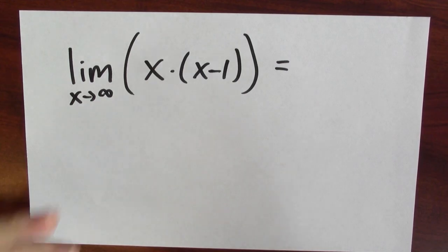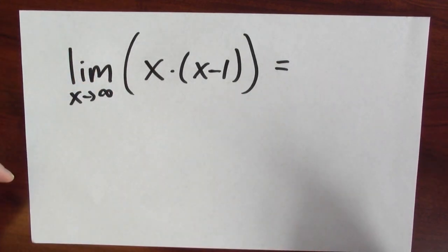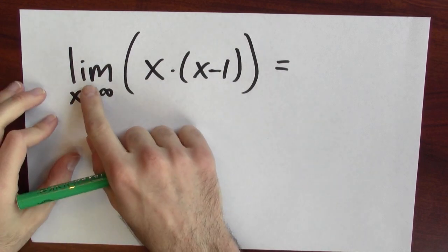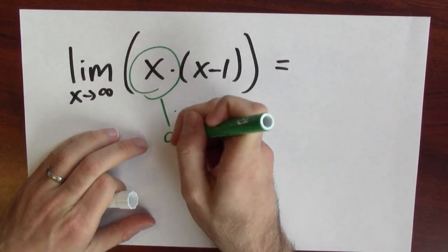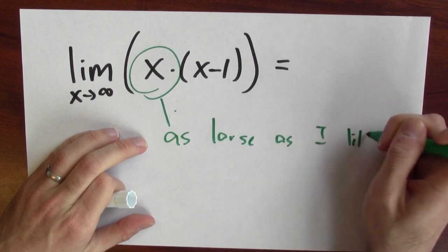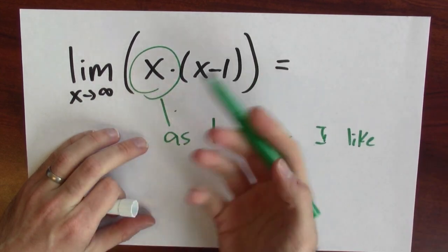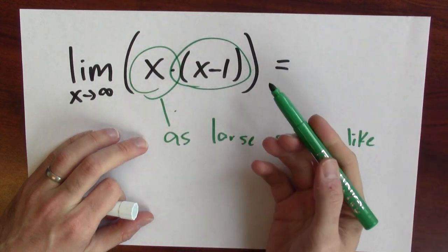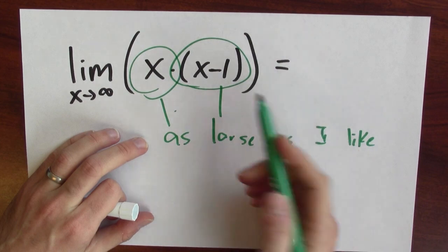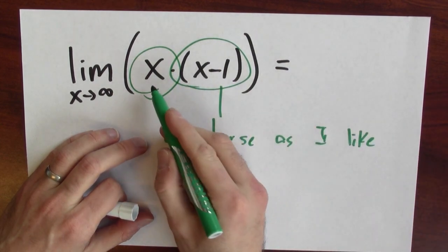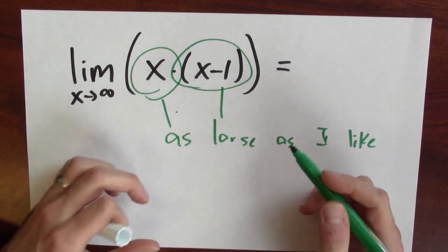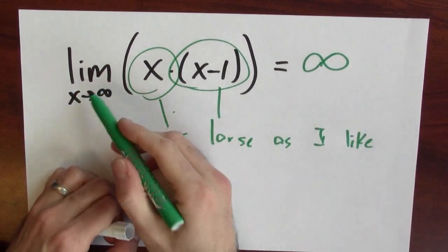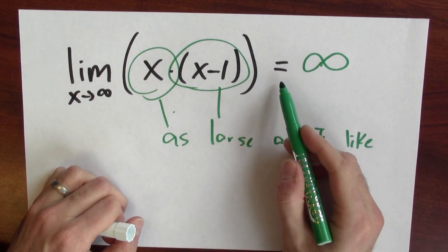Infinity is not a number like 17. But something comes to save the day — we can do limits. Consider a calculation involving infinity, but instead of working with infinity directly, phrase it as a limit question. What's the limit of x times (x minus 1) as x approaches infinity? Well, x can be made as large as I like, and x minus 1 can also be made as large as I like. The product of two numbers that are both as large as I want can also be made as large as I want. So the limit of x(x−1) as x approaches infinity is equal to infinity.